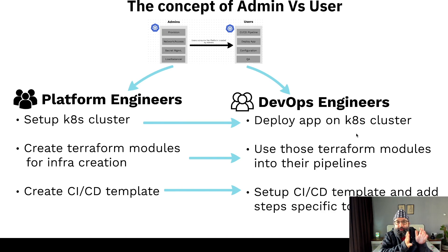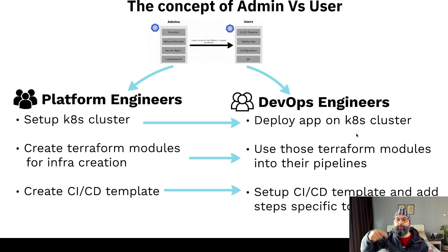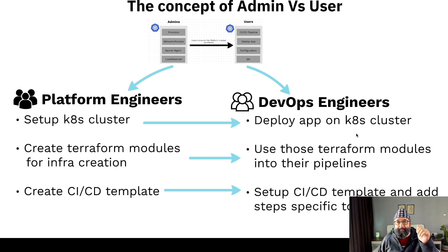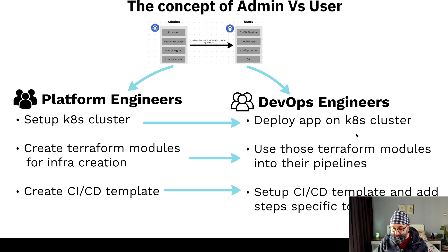This is how admins take the form of platform engineers. Platform engineers set up the Kubernetes cluster; DevOps engineers become users of that platform and deploy apps onto it. Platform engineers create Terraform modules for creating infrastructure; DevOps engineers use those modules in their own pipelines. Platform engineers create CI/CD templates — 'if your product is .NET use this, if it's Java use this, if it's Node.js use this' — and the DevOps engineer takes that template and adds application-specific steps.